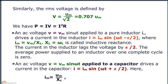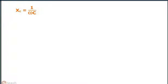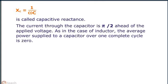An AC voltage V equals Vm sin ωt applied to a capacitor drives a current in the capacitor I equals Im sin (ωt plus π/2). Here Im equals Vm by Xc. And moreover Xc equals 1 by ωc is called capacitive reactance. The current through the capacitor is π/2 ahead of the applied voltage. As in the case of inductor, the average power supplied to a capacitor over one complete cycle is zero.